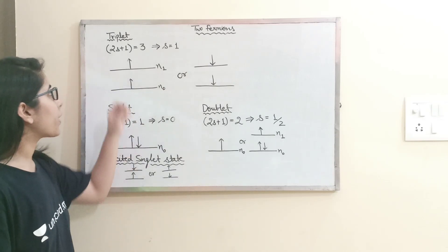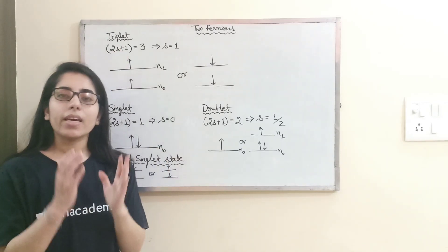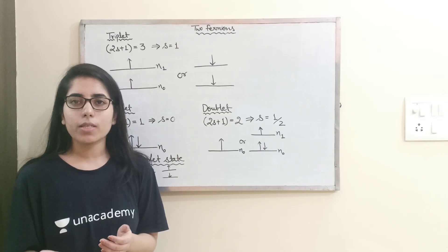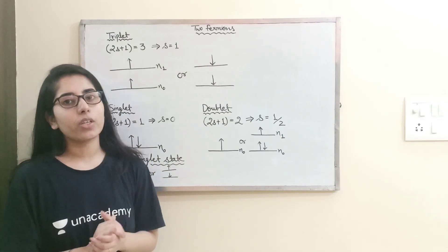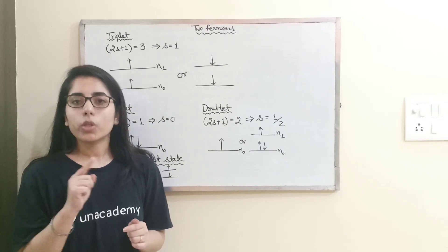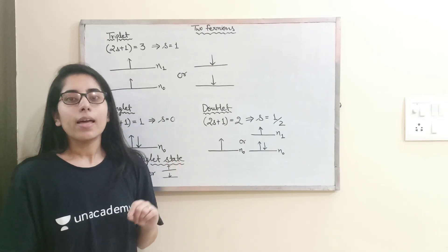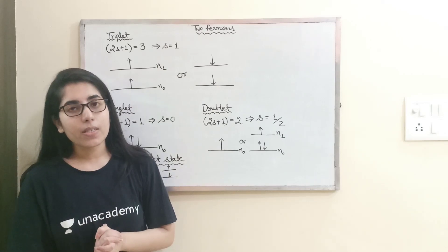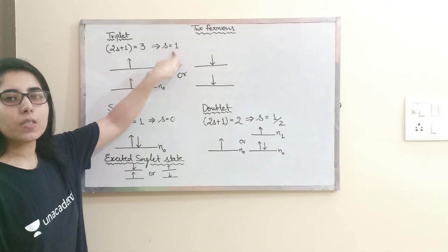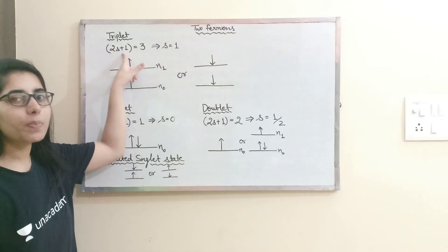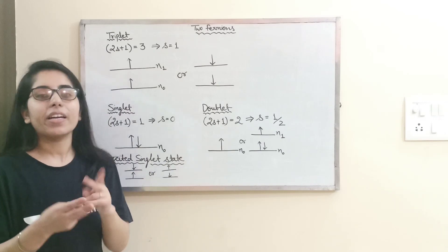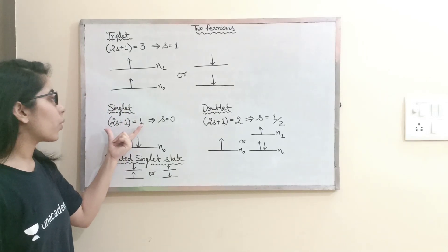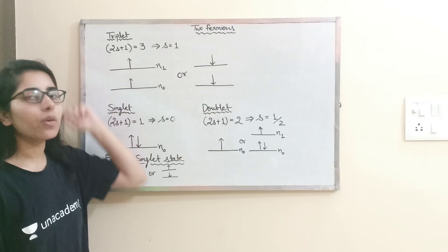When we are talking about the triplet state, we need to check the multiplicity. Multiplicity is 2S+1, where S is the spin. When I say triplet state, 2S+1 should equal 3, and from here total spin S equals 1. For triplet multiplicity is 3, for doublet it is 2, and for singlet it is 1. By equating them we get to know about the spin.